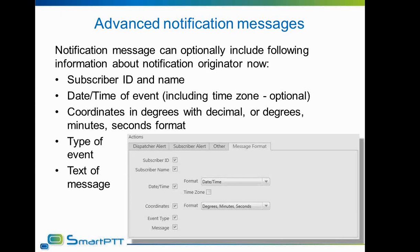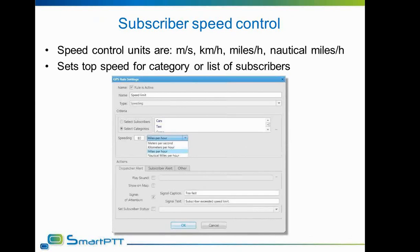The second event update is the GPS speed control rule. This new rule allows the dispatcher to set control of a subscriber's speed over ground. The dispatcher will receive a notification every time a subscriber exceeds the speed limit, and a notification message can also be sent. Speed limits can be set in meters per second, kilometers per hour, miles per hour, or nautical miles per hour, giving flexible settings for different types of vehicles and subscribers.